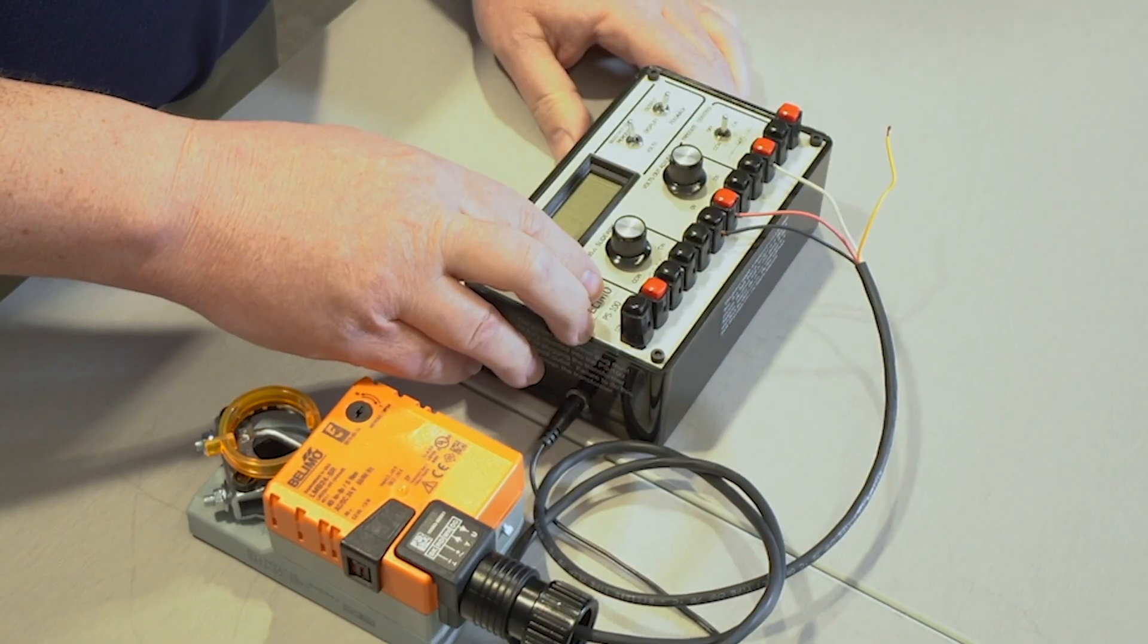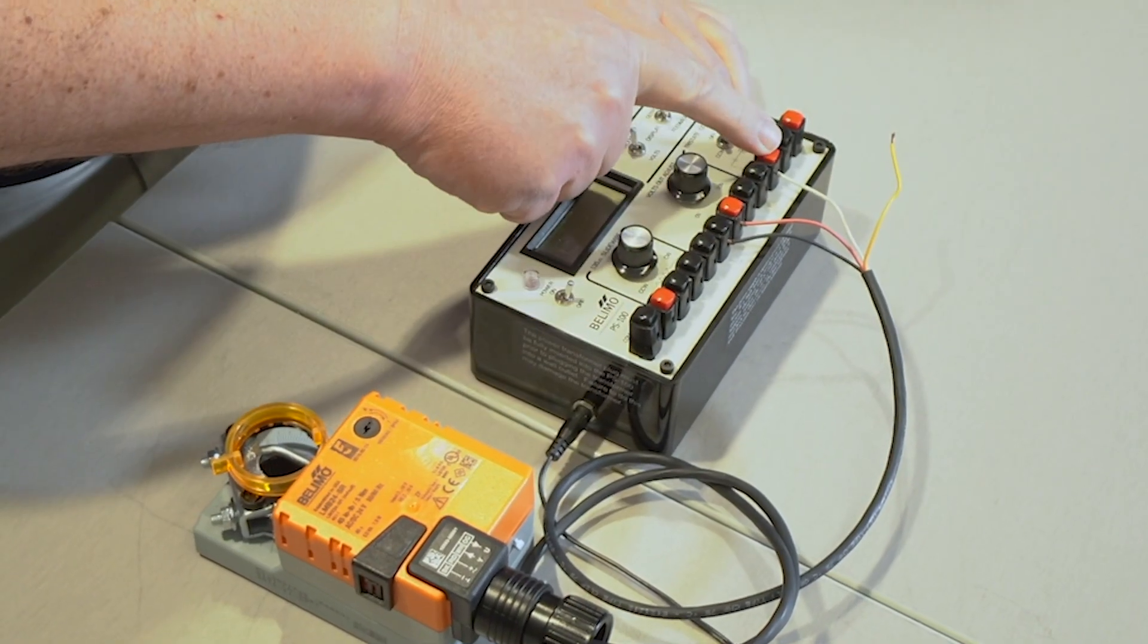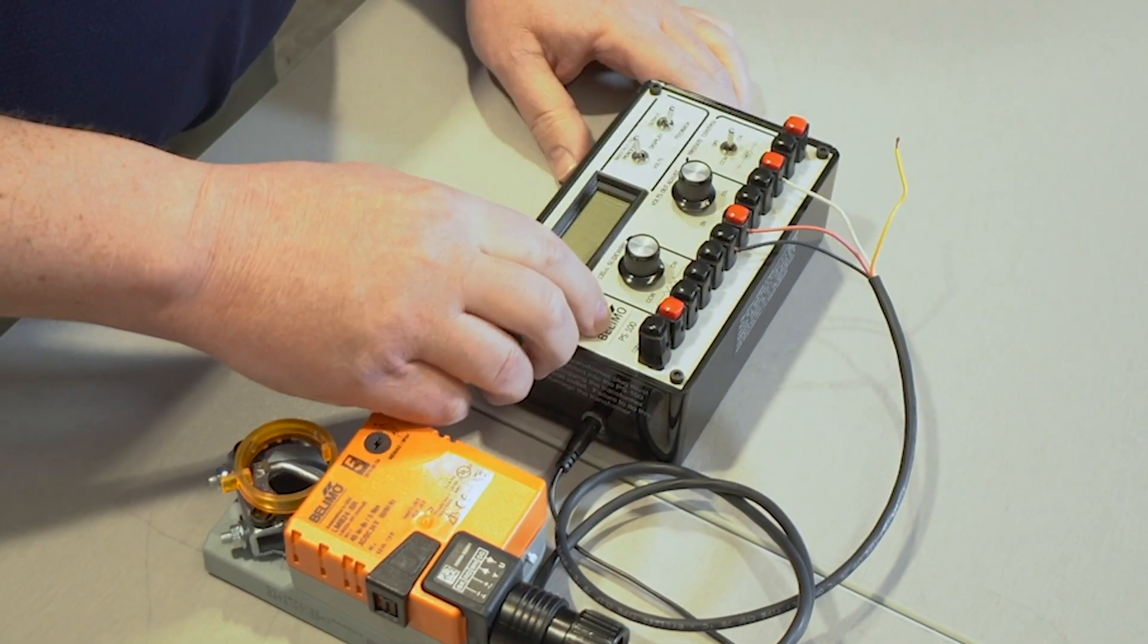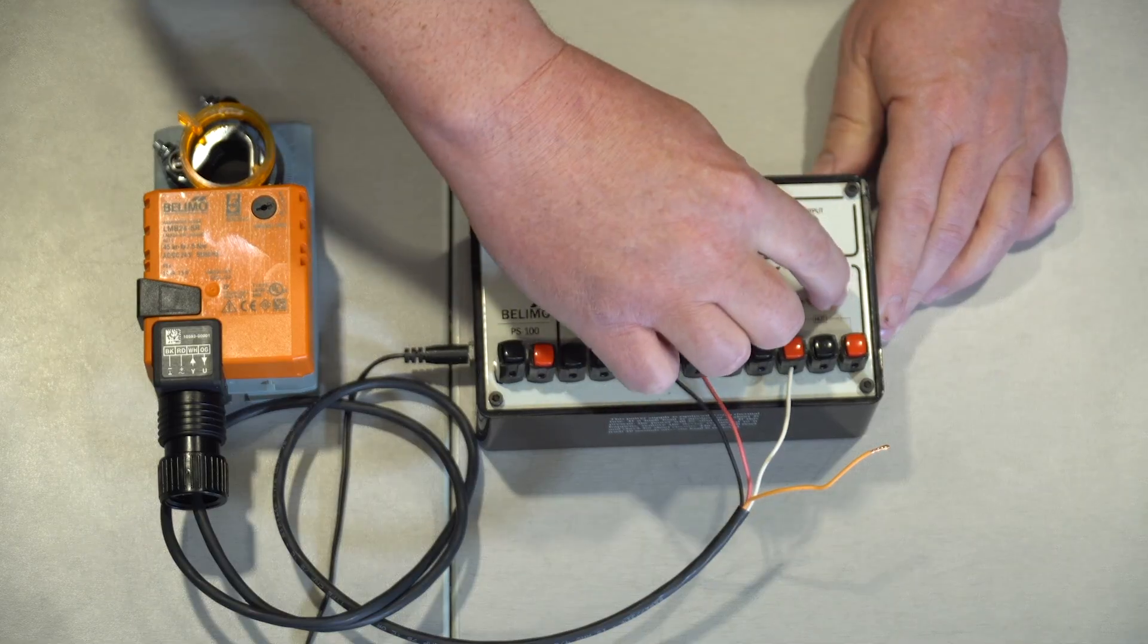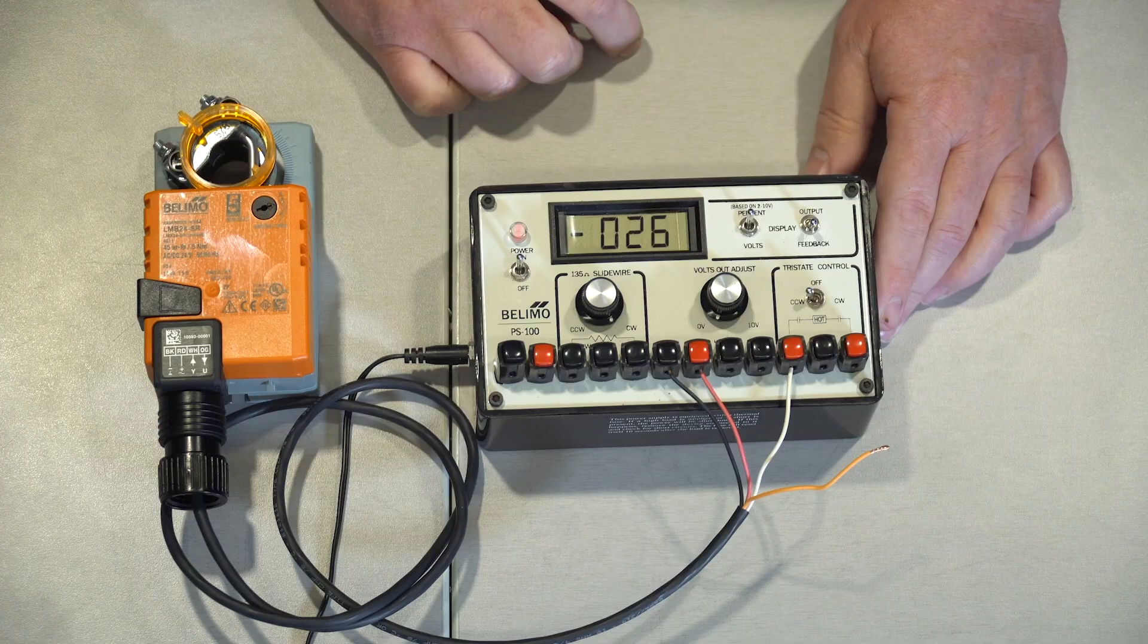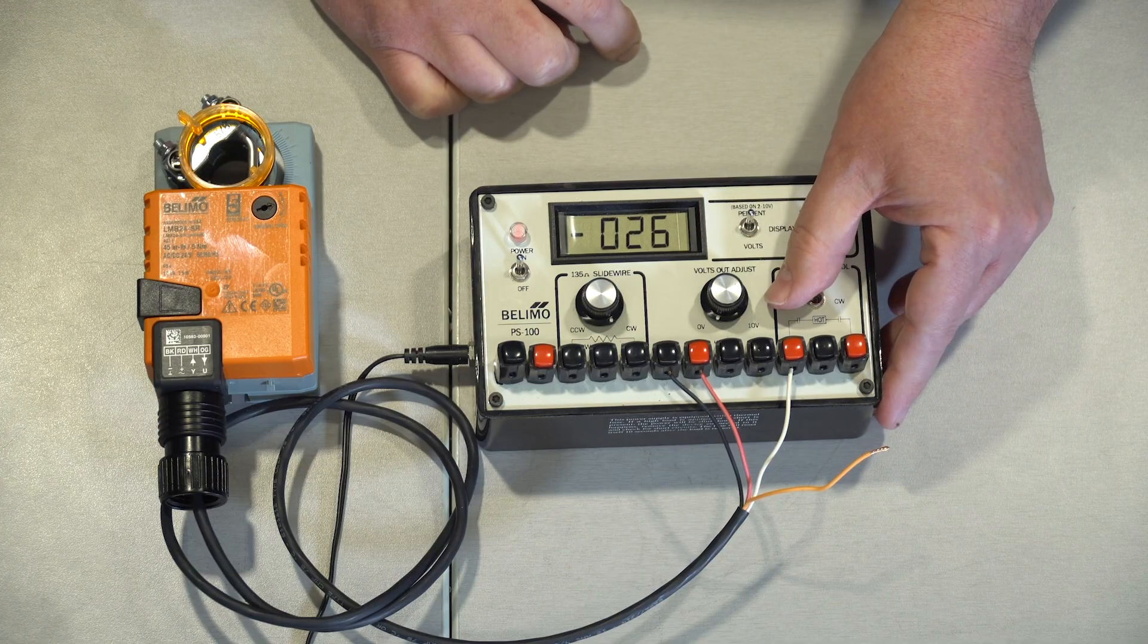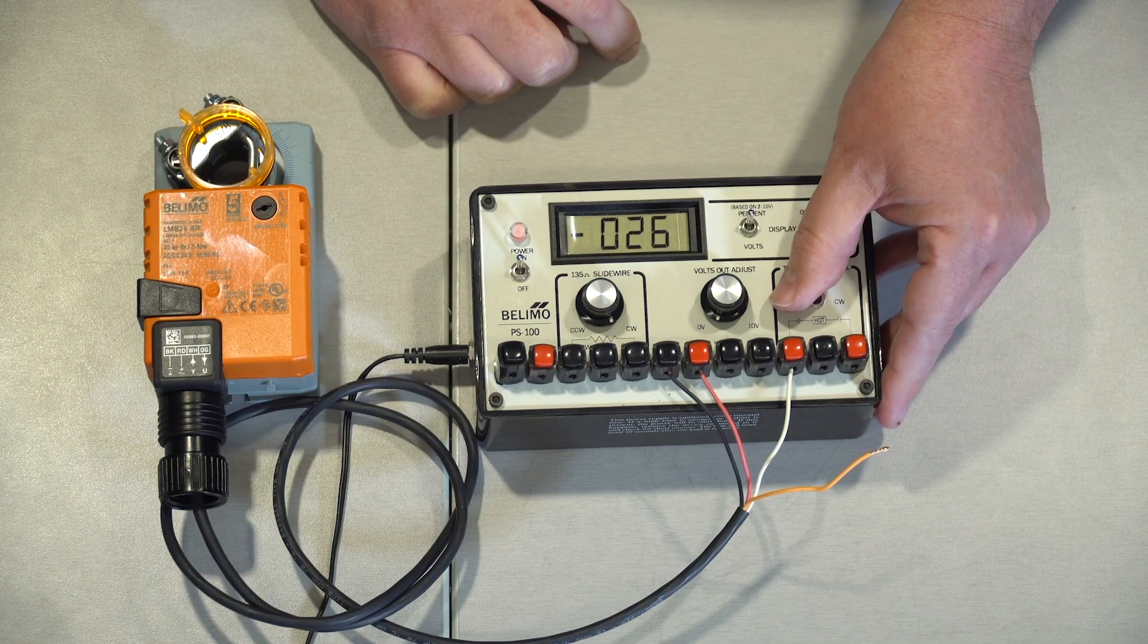Now with 24 volts on the control input, when you apply 24 volts, the actuator will power all the way open, and when 24 volts is removed or a zero volt signal is applied, it will drive closed.